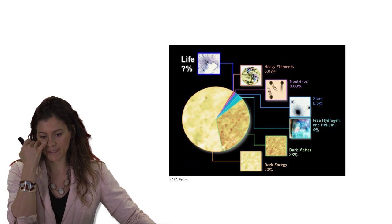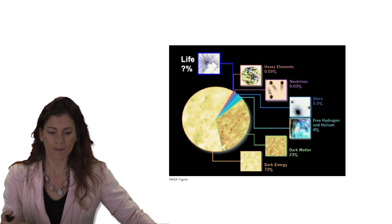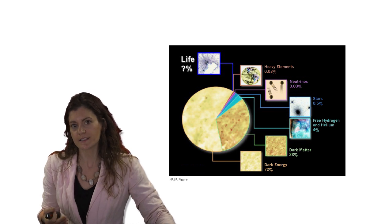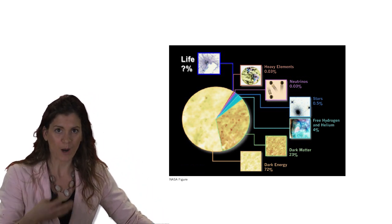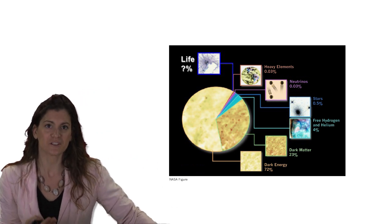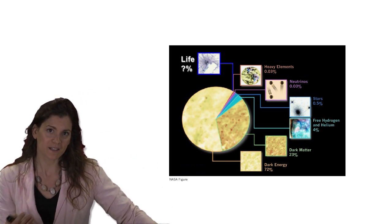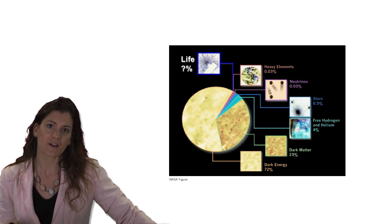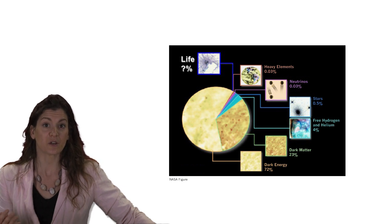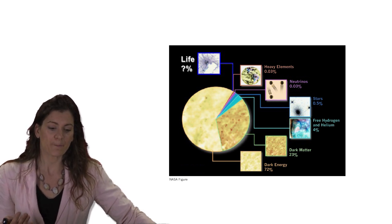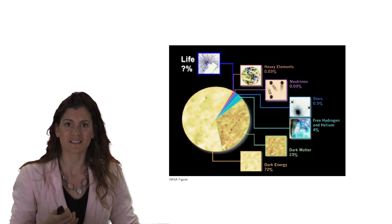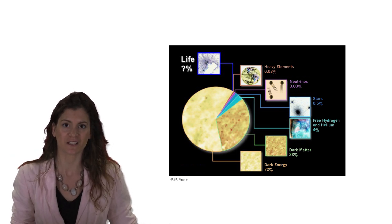I think the ultimate question that we're really after is to think about life from a first principles perspective and understand life as a fundamental property of some physical systems, that some fraction of the universe actually becomes animate, becomes living. We don't understand how that process happens yet. We don't understand what that process is. We don't even really know what it looks like. But the question for astrobiology is: what fraction of the universe is living and how do we discover it and understand its properties?